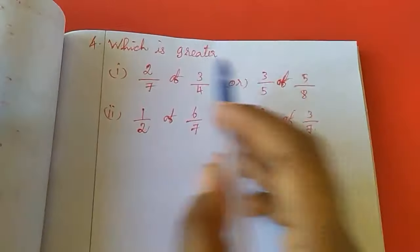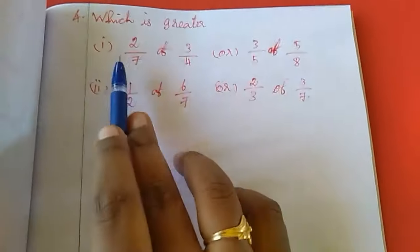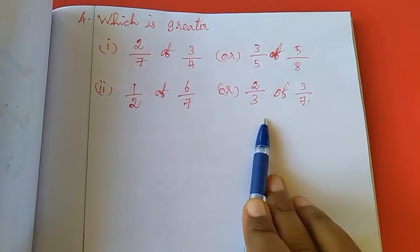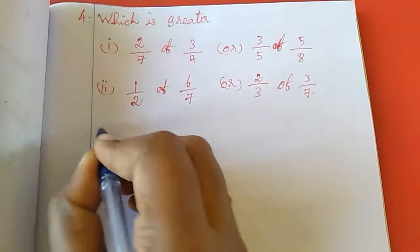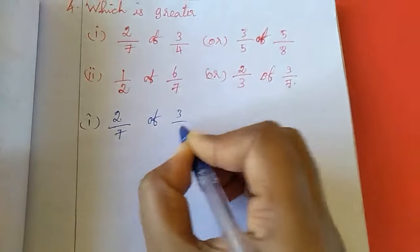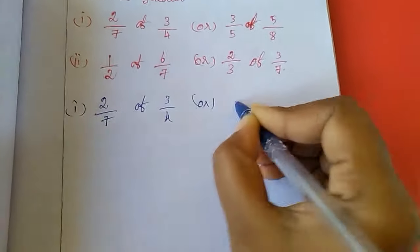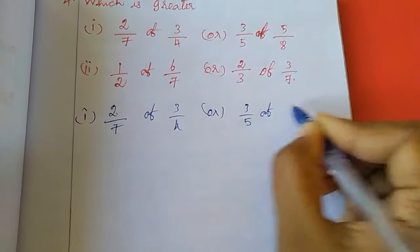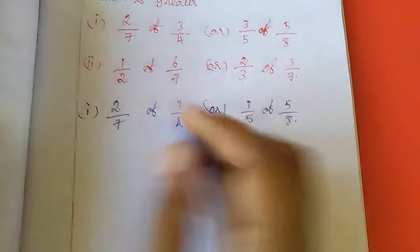See here this is 4th sum: which is greater. 1st sum I am going to do, 2nd sum is homework for you. 1st sum see here: 2/7 of 3/4 or 3/5 of 5/8. I am going to do this.